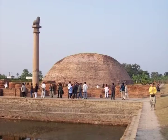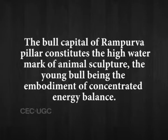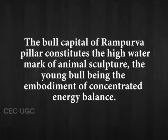Another distinguished feature of the Mauryan sculptures is the bright polish imparted to the stone surface. Monolithic stone pillars 40 to 50 feet high are adorned with animal capitals of striking craftsmanship. They stand on the ground without any base; the round shafts are plain and devoid of all decoration, distinguished only by their capitals. The pillar at Lauriya Nandangarh is remarkable for its tall shaft. The bull capital of the Rampurwa pillar constitutes the high watermark of animal sculpture, the young bull being the embodiment of concentrated energy and balance.